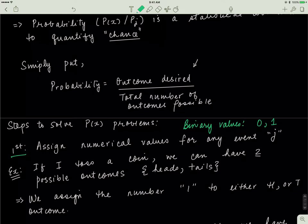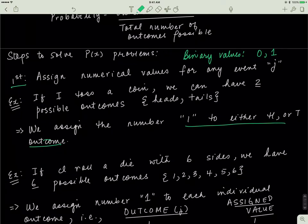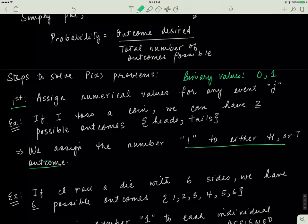Let's do an example. If I toss a coin, we have two possible outcomes — heads or tails — and we use binary numbers to classify them, assigning the number 1 to either outcome. For a die with six sides, we have six possible outcomes: we can land on 1, 2, 3, 4, 5, or 6. The total number of outcomes is six.